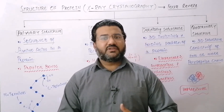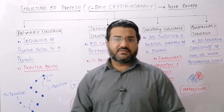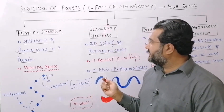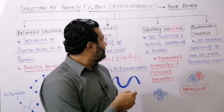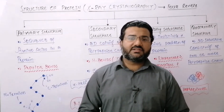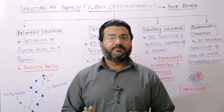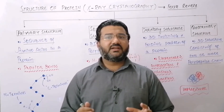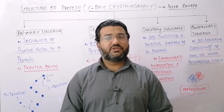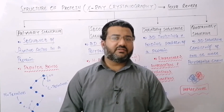There are four levels of the organization of the structure of the proteins. These four levels are the primary structure, secondary structure, tertiary structure, and quaternary structure. The primary structure is the simplest level of the structure of the proteins, while the tertiary and quaternary levels are the most complex levels of the structural organization of the proteins.